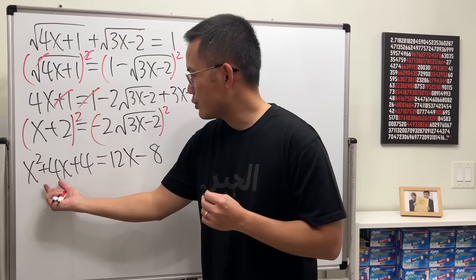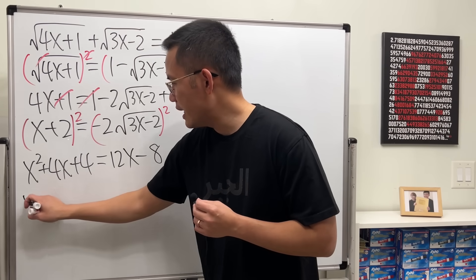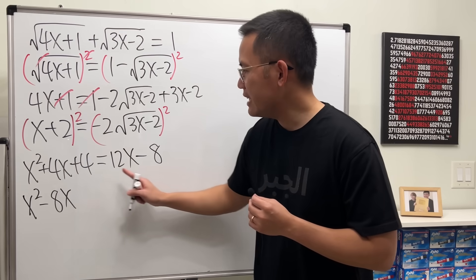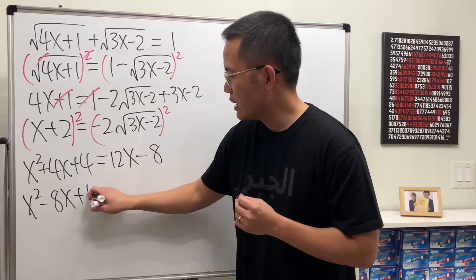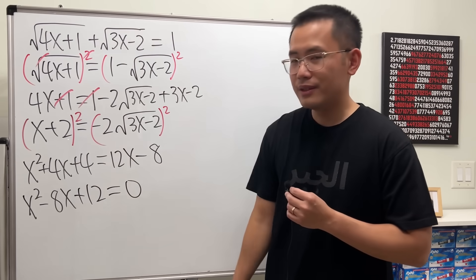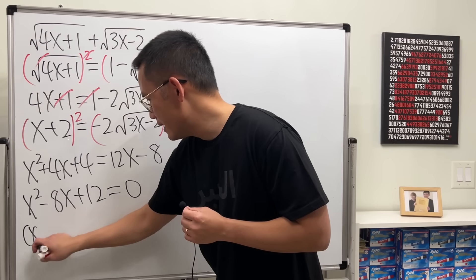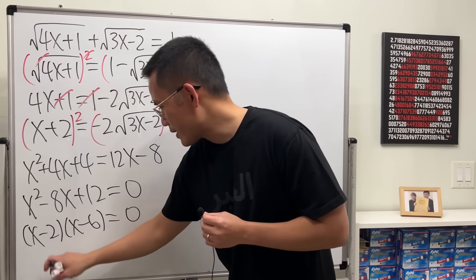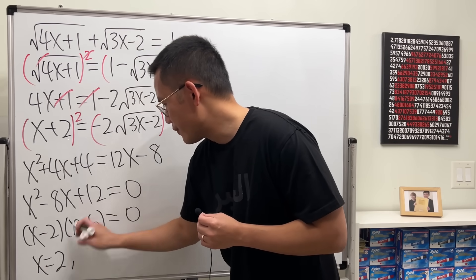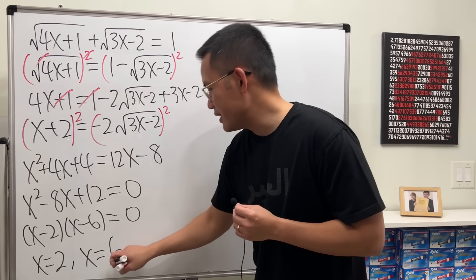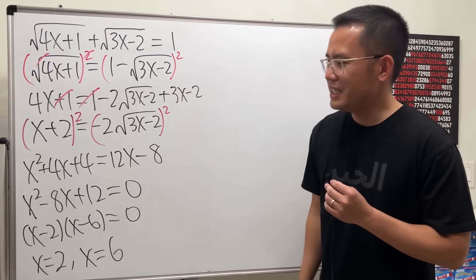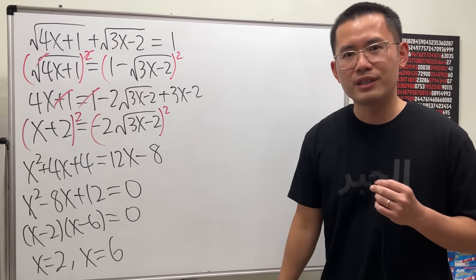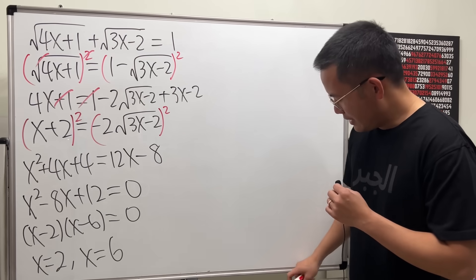Subtract 12x from both sides to get minus 8x, then add 8 to both sides, giving us x squared minus 8x plus 12 equals zero. Factor this: (x minus 2)(x minus 6) equals zero. So x equals 2 and x equals 6. They are both positive — they look so innocent — but they're not going to work.